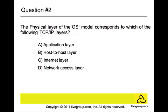Question number two: The physical layer of the OSI model corresponds to which of the following TCP/IP layers? The answer is D, the network access layer. The physical layer is special compared to the other layers of the model because it is the only one where data is physically moved across the network interface. All of the other layers perform useful functions to create messages to be sent, but they must all be transmitted down the protocol stack to the physical layer where they are actually sent out over the network.